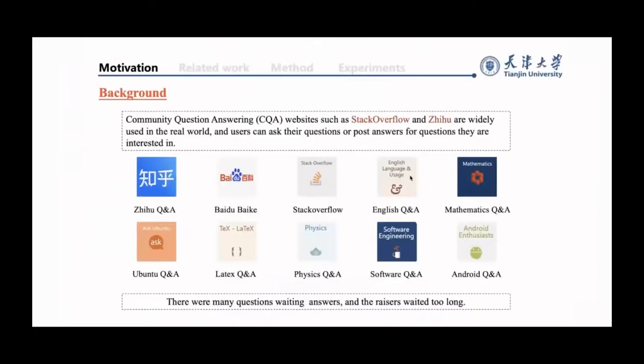Community question answering websites such as StackOverflow and Zhihu are widely used in the real world, and users can ask their questions or post answers for questions they are interested in. Our work focuses on expert finding in CQA websites.